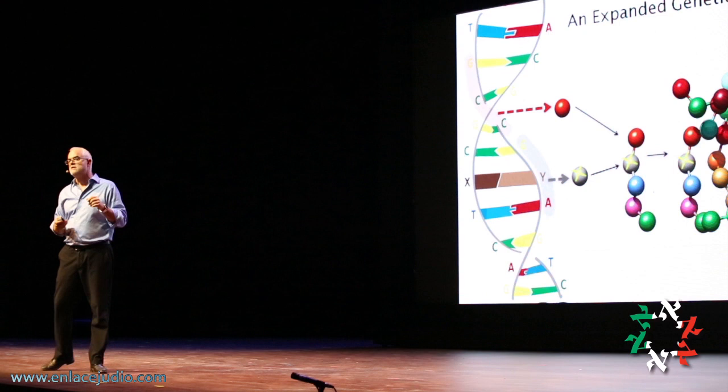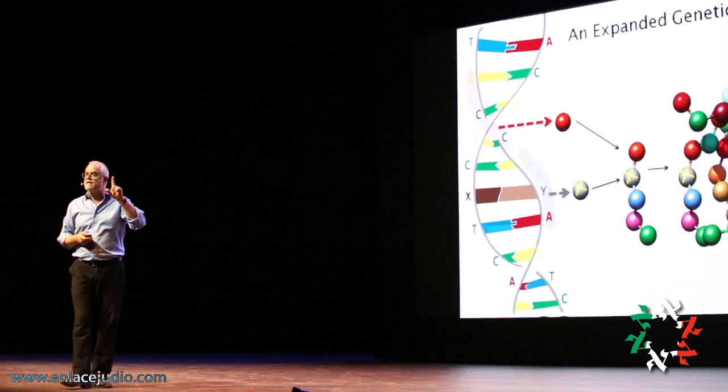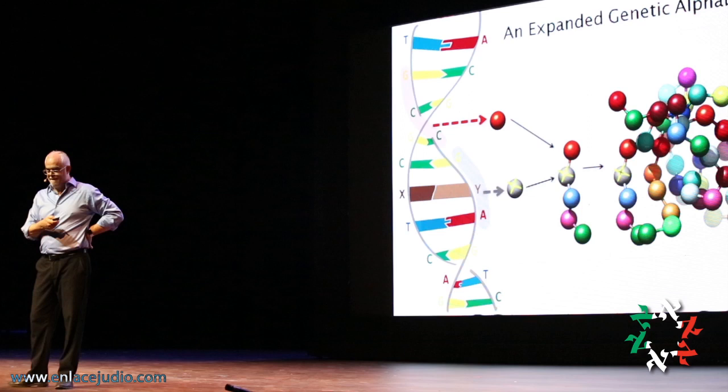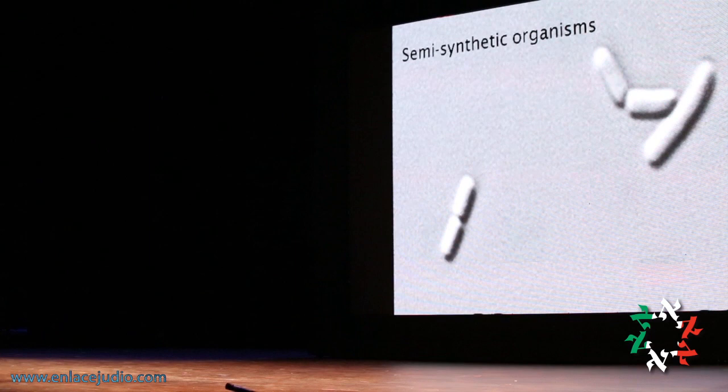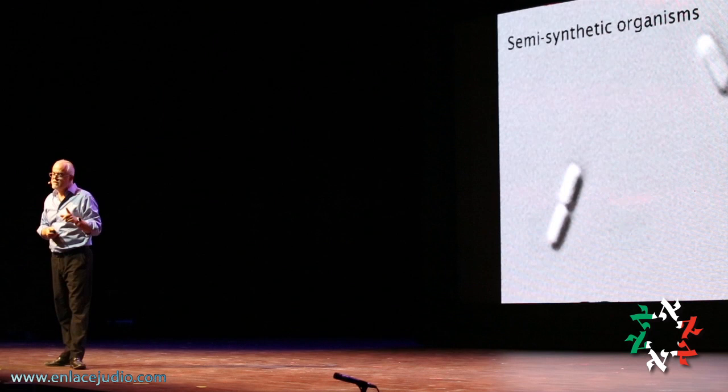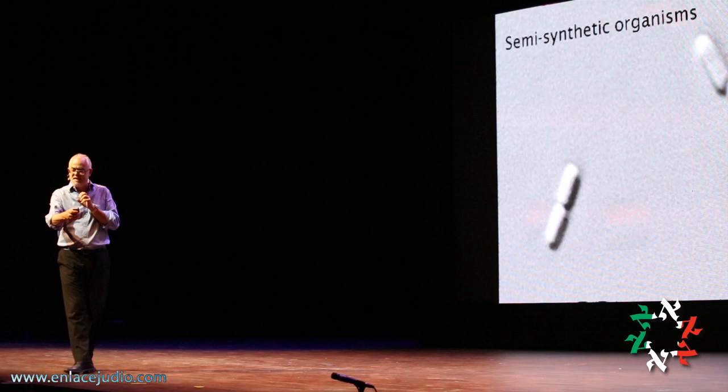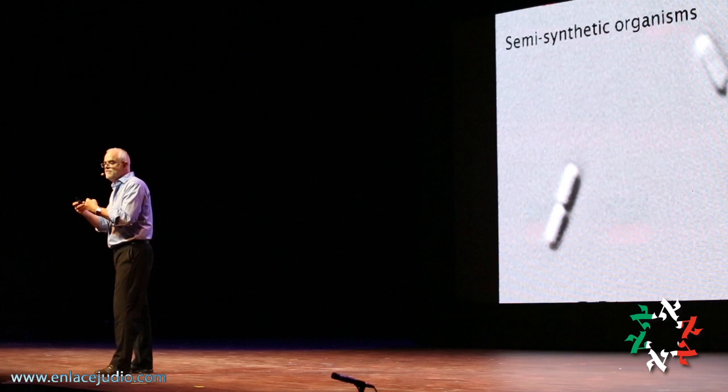We could grow living organisms that had X and Y in their DNA and that could use that to make proteins. Since the last common ancestor of all life on Earth, it's been four letters and two pairs. These organisms are growing — and I love this picture because it actually catches them in the act of dividing. The one on the right is elongating, an E. coli cell about to divide, and next to it are two cells in the process of dividing. And they have six letters, three base pairs.